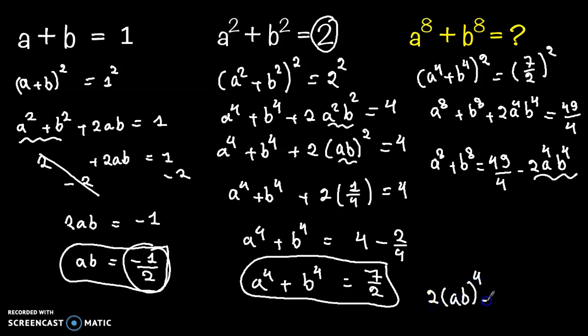So 2 times (minus 1)⁴ equals 1, and 2⁴ equals 16. Now 2 over 16 equals 1 over 8. So here we will get 49 over 4 minus 1 over 8.